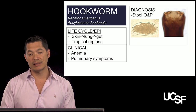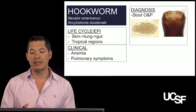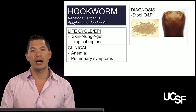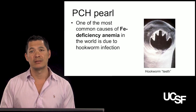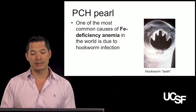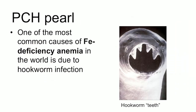You can diagnose it by iron deficiency anemia as a clue, but mainly ova and parasite analysis in the stool is how we diagnose most of these infections. One of the most common causes of iron deficiency anemia in the world is due to hookworm infection. Here you can see the hookworm with all its pointy little teeth, waiting to suck blood from your small intestines.